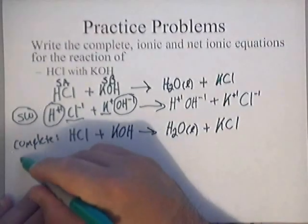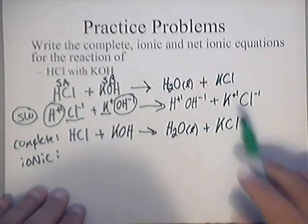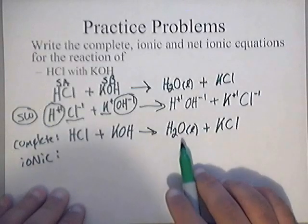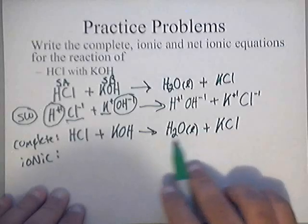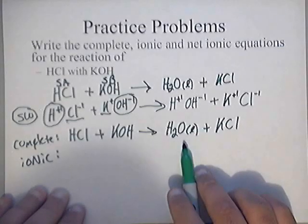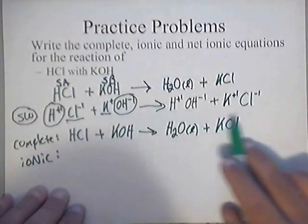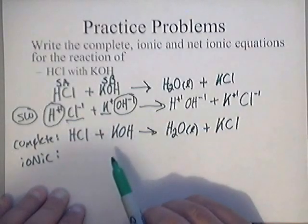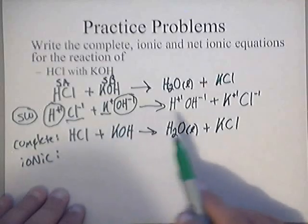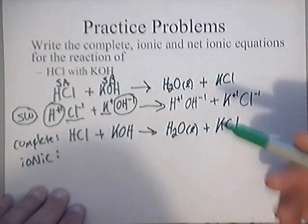Now let's get the total ionic equation. Basically it's your scratch work in order, but remember — you do not break water into ions. And if you ever have a weak base or weak acid, don't break them apart either. In your ionic and net ionic equations, do not break down weak bases, weak acids, precipitants, solids, liquids, or gases into ions.